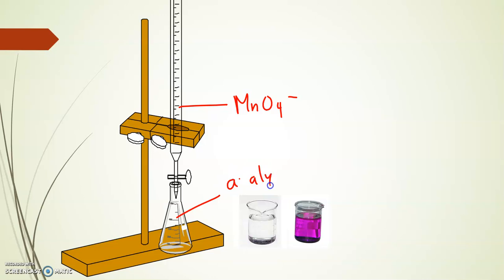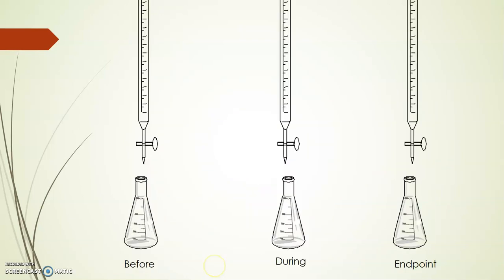We're going to assume that you remember how to do titrations from chemistry 20. So we have a burette with MnO4- and the Erlenmeyer flask where we will pipette into. So let's look at what happens before and during and after the titration to see how the color change results.